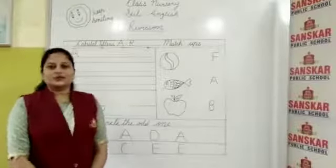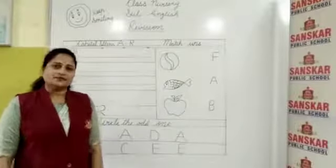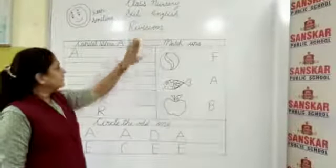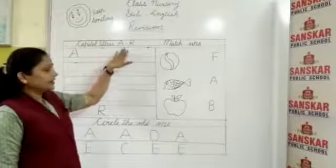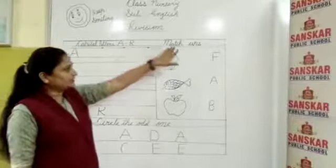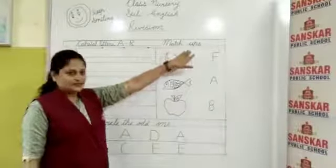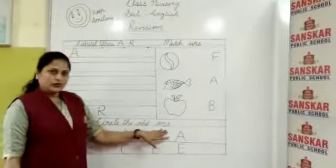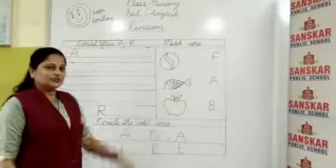Hello, good morning students. Welcome to Sunstar Public School. This is your English revision class and today we learn capital letters A to R, then matchups, and circle the odd one. Okay my students? So start with me.